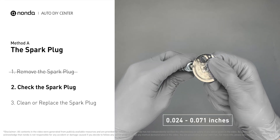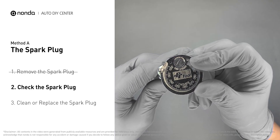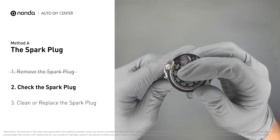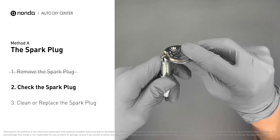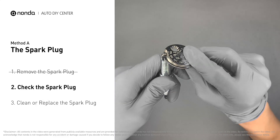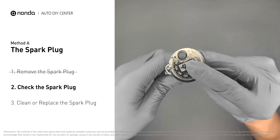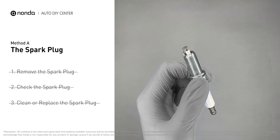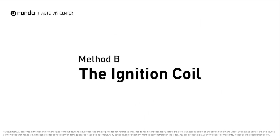Normally the spacing should be between 0.024 to 0.071 inches. As you can see, the spacing of this spark plug is a bit low. Use the spark plug gapper to increase the spacing back to the normal range. But if you see there is obvious damage on the spark plug, simply replace it with a new one.